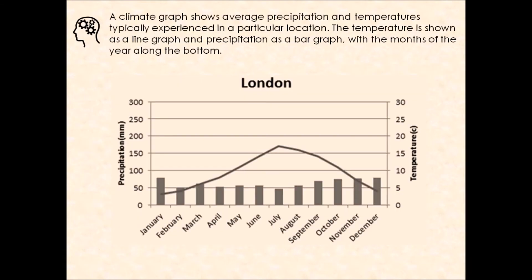When it comes to weather and climate, you might be asked to analyse or use a climate graph in your GCSE examinations. A climate graph is what we would know as an average precipitation and temperature graph, which typically shows conditions experienced in a location. On the screen here is a climate graph for London in the UK.